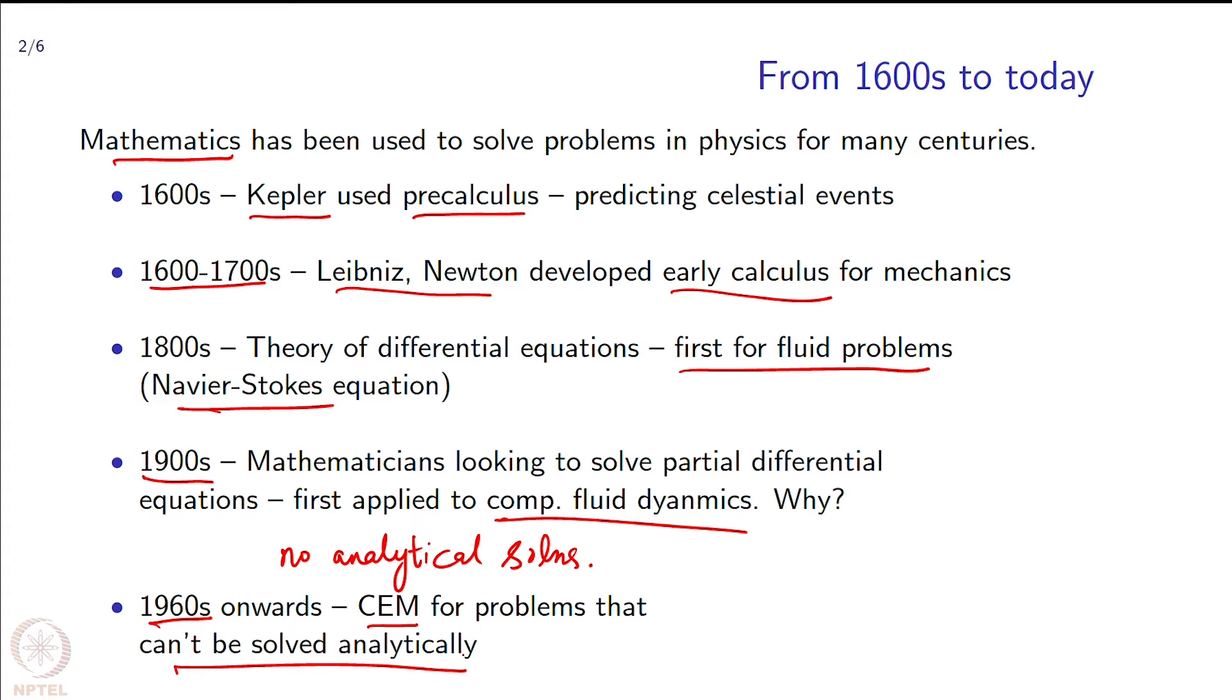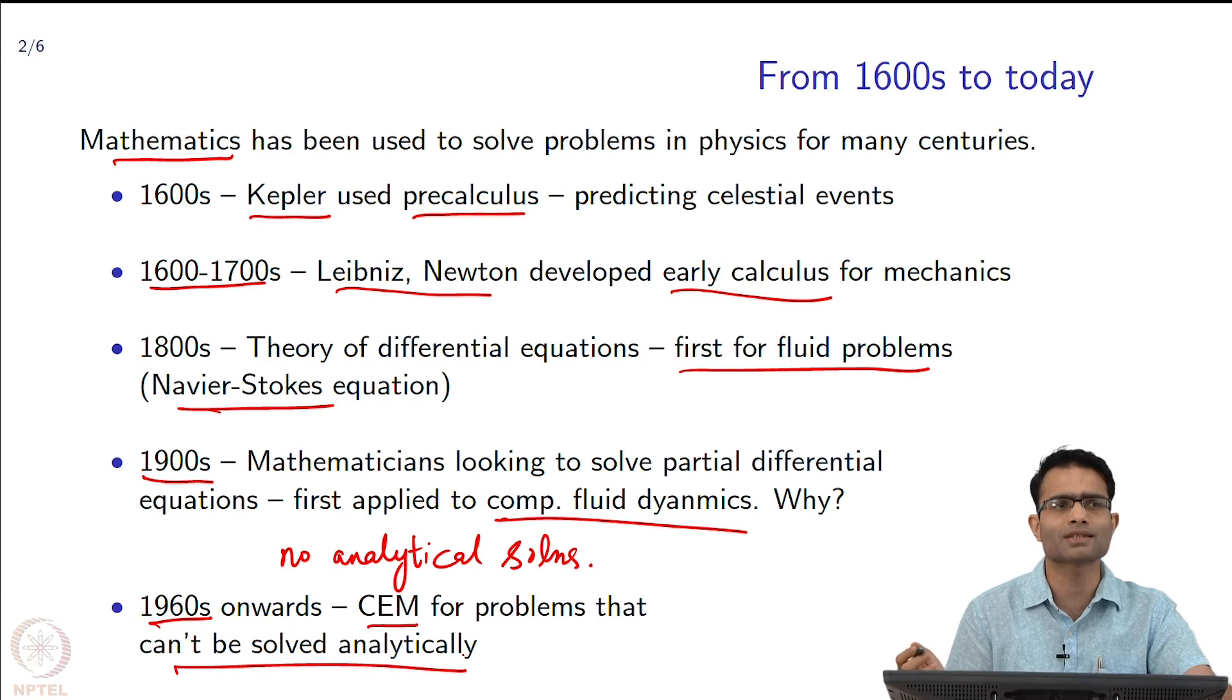The problems that can be solved analytically in electromagnetics are simple things like you have a cylinder or a sphere or a plane - how does a wave interact with this. People have written analytical solutions, not that they are easy - they are very complicated when you look at them, lots of Bessel functions and this and that, and we will see a lot of that in this course. That is 60s onwards is when this field has come about, so it is not a very very old field.